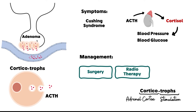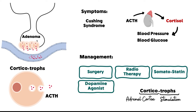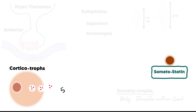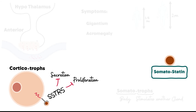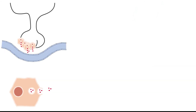The management of this type of adenoma is surgery, with radiotherapy as adjuvant. Somatostatin is usually used as neoadjuvant and can sometimes be combined with dopamine agonists for biochemical control of ACTH levels. In corticotrophs, somatostatin binds to a receptor called SSTR5, causing suppression of secretion and suppression of proliferation — an anti-tumor effect.